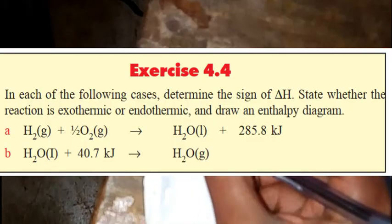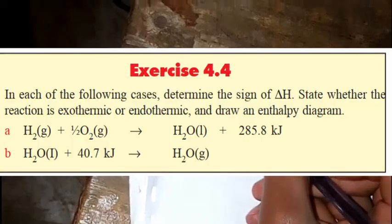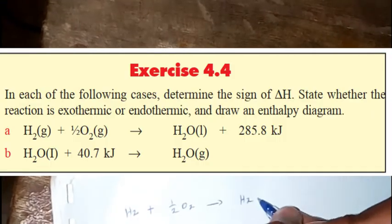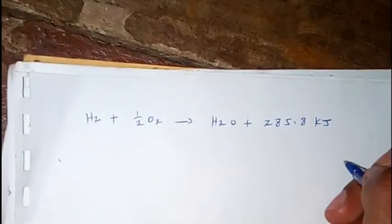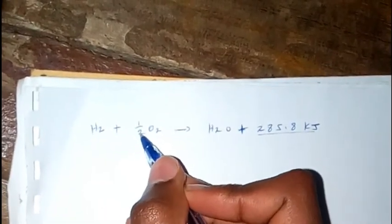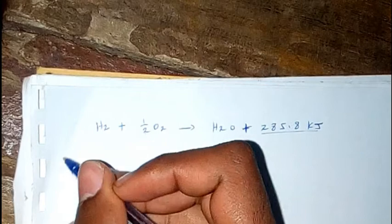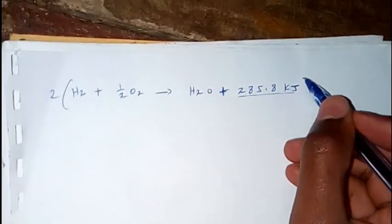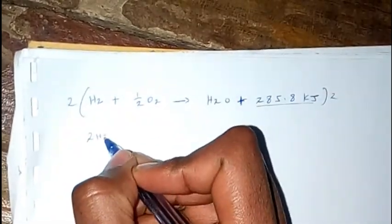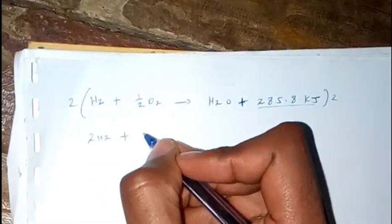Question one: Hydrogen gas plus oxygen gives us water plus 283.8 kilojoules. The product releases energy, so the process is exothermic. Energy is released, so it's exothermic. The coefficients should be balanced.